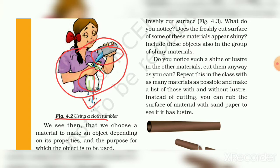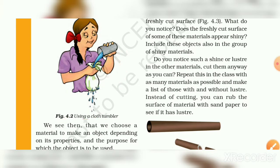When we make chai, we use a cloth strainer — we close the cloth and pour chai through it from the top. The waste stays on top while the chai passes through to the bottom. This is the same example showing how any liquid passes through cloth.